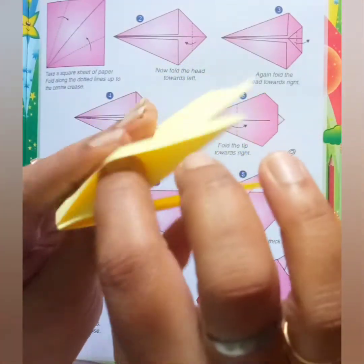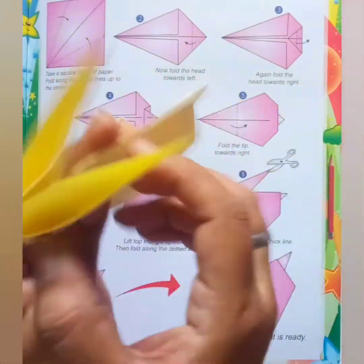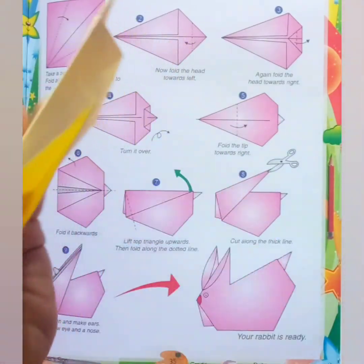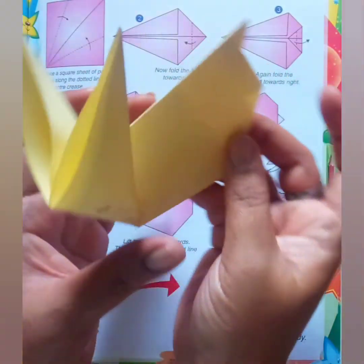Now you can insert your finger and see the ears of rabbit will come like this.